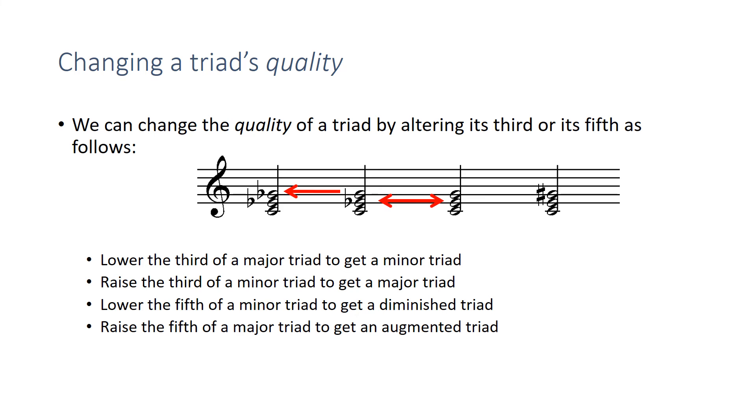Now, if you start with a major triad and raise the fifth, then you get an augmented triad. So I take C major, raise the fifth, and C augmented. So that's how they all are interrelated to one another. Again, remember the order in which they stand there. You can go from diminished to minor to major to augmented by just changing one of the pitches by a half step. But you couldn't take an augmented triad and go directly to diminished just by lowering the fifth. That would not get to the other end of the spectrum, right?